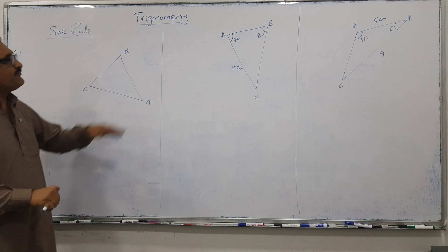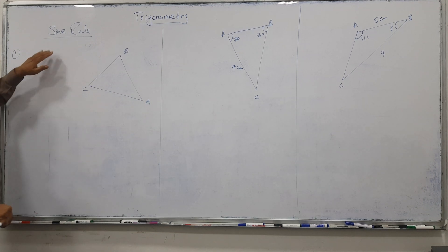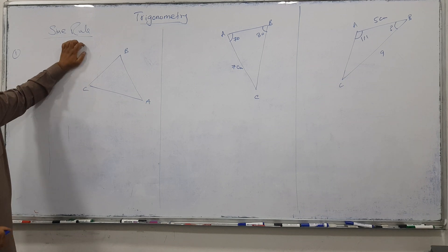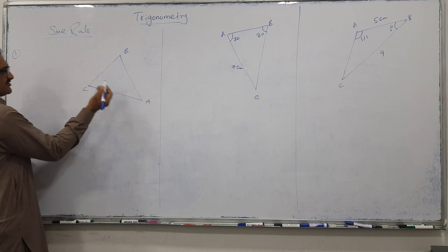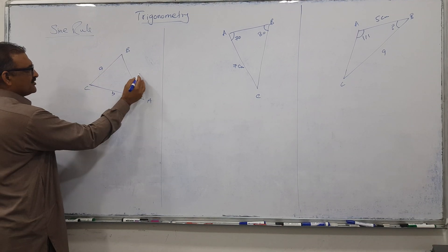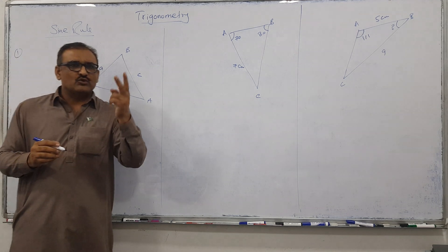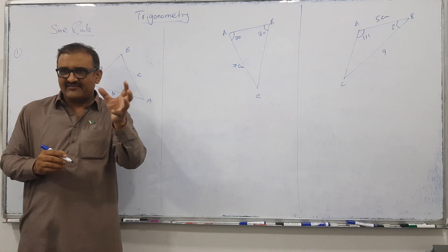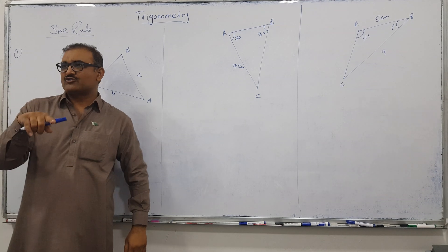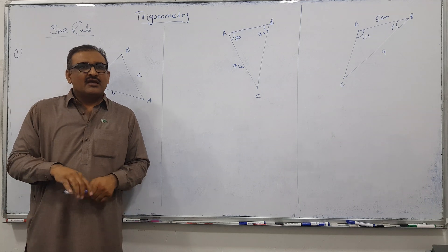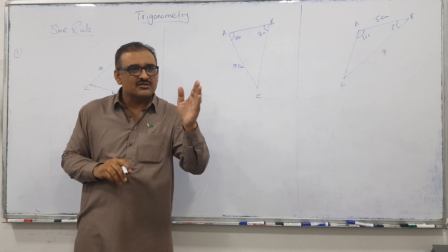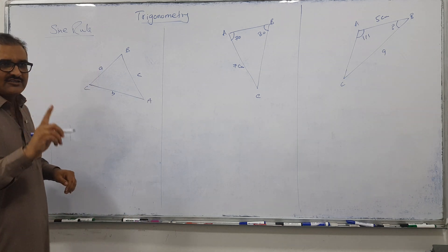The topic is trigonometry, specifically the sine rule. In the sine rule, in front of angle A we have small a, small b, and small c. There are two conditions to apply the sine rule: three sides given, or two sides and the middle angle given. The basic rule is: when you can't apply the cosine rule, go for the sine rule.